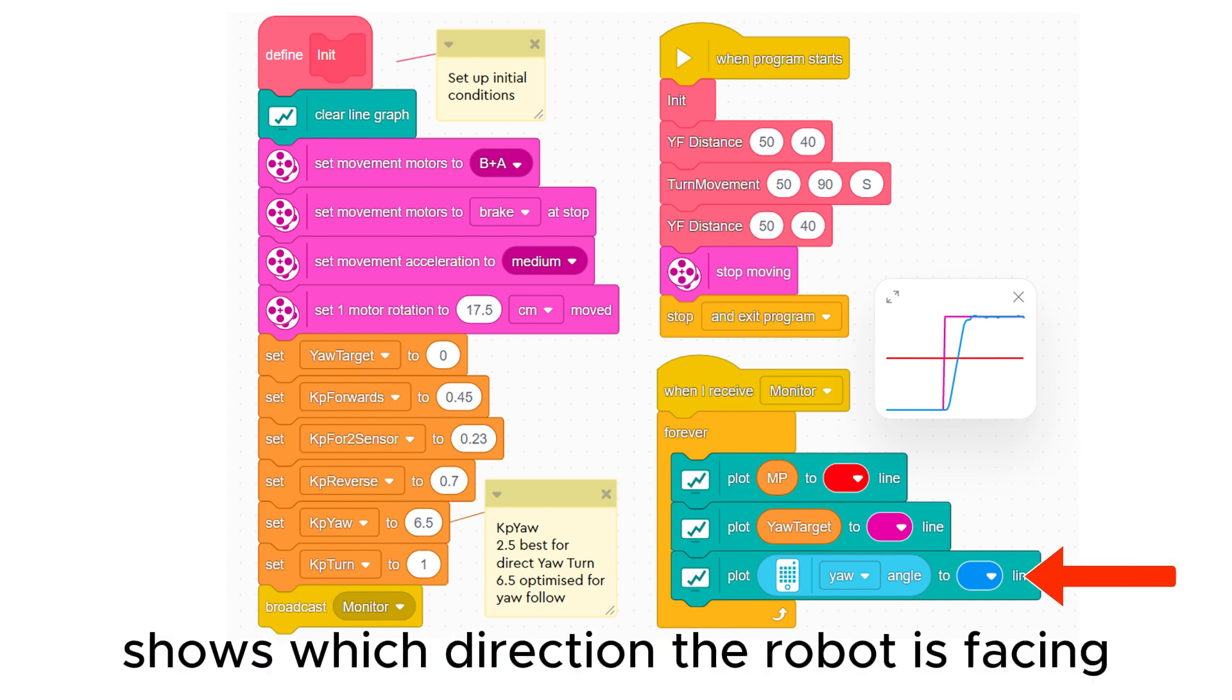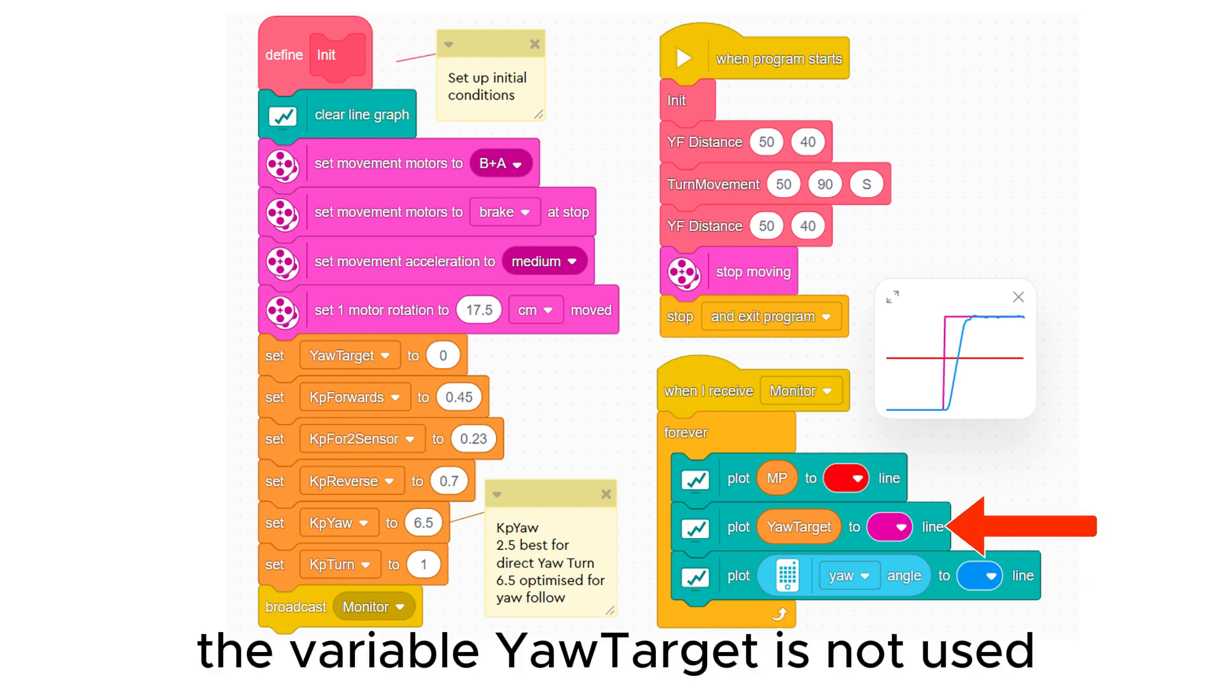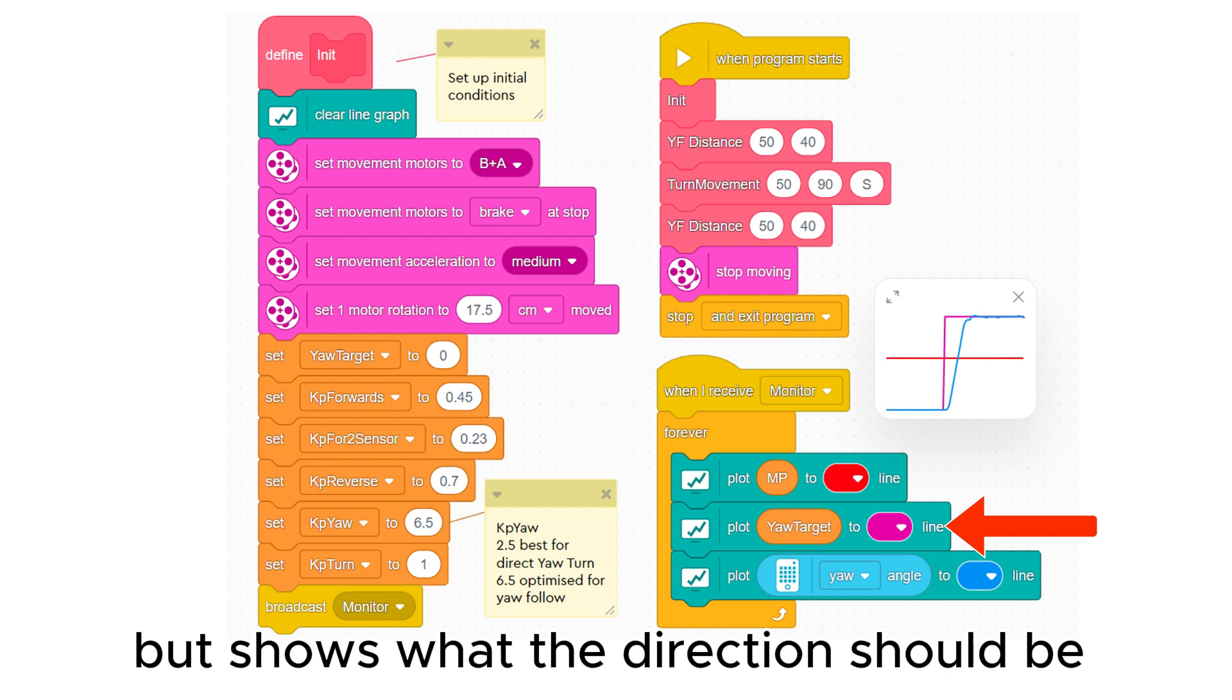The yaw sensor shows which direction the robot is facing. The variable yaw target is not used by the turn my block but shows what the direction should be after the turn.